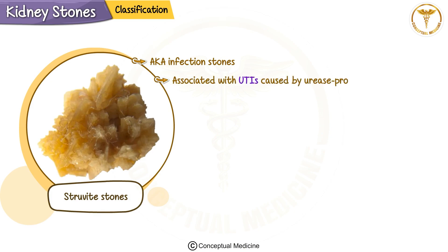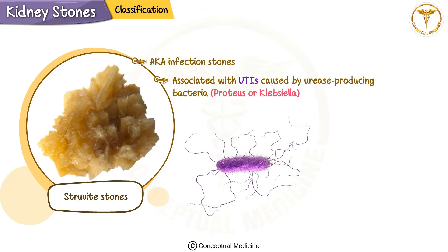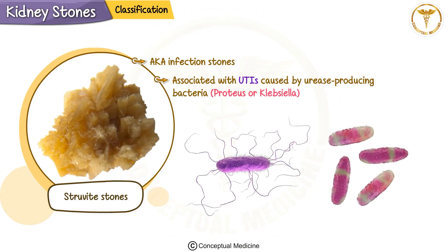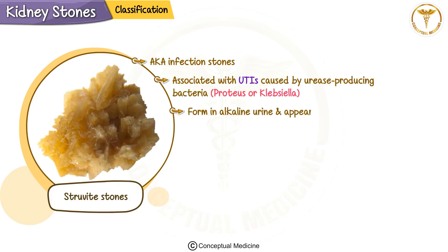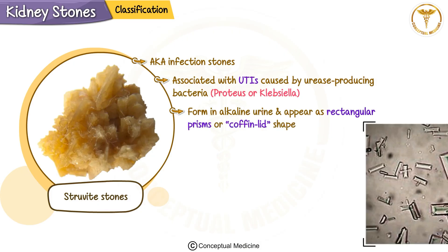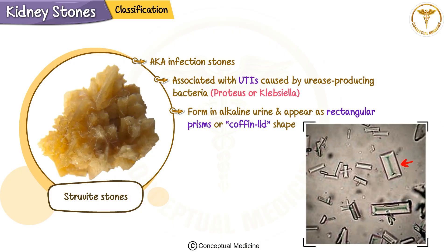Struvite stones, also known as infection stones, are associated with UTIs caused by urease-producing bacteria like Proteus or Klebsiella. These stones tend to form in alkaline urine and appear as rectangular prisms with a coffin lid shape.